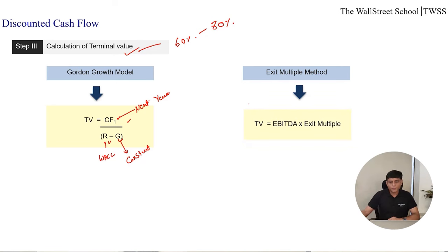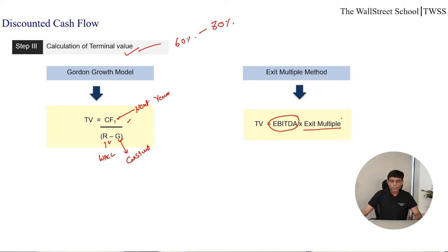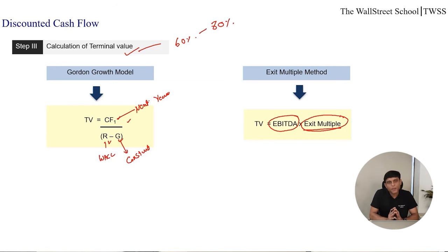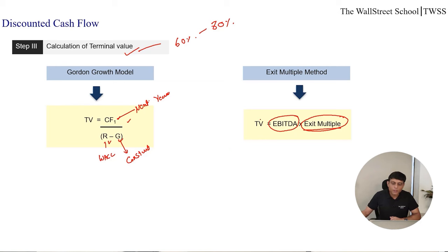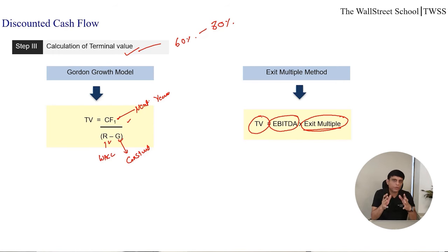The second method is the exit multiple method. Here, the terminal value is based on a relative approach: we multiply the EBITDA of the last projected year by an exit multiple. For example, if the industry analysis shows companies are priced at 14 times EBITDA, we multiply the terminal year's EBITDA by 14 to get the approximate value of the business at the end of the projection period. This gives the terminal value using the relative valuation approach.